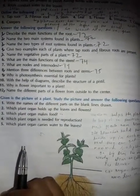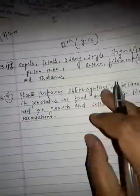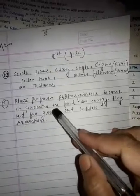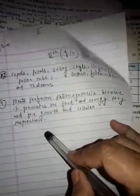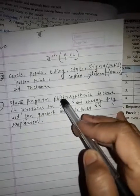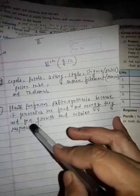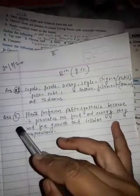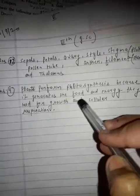Answer nine: why is photosynthesis essential for plants? Plants perform photosynthesis because it generates the food and energy they need for growth and cellular respiration.